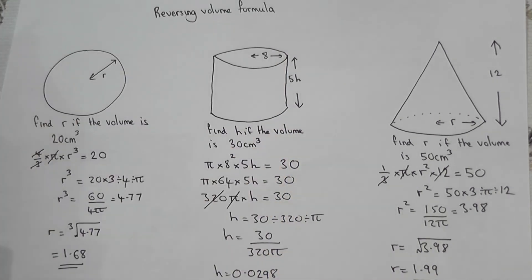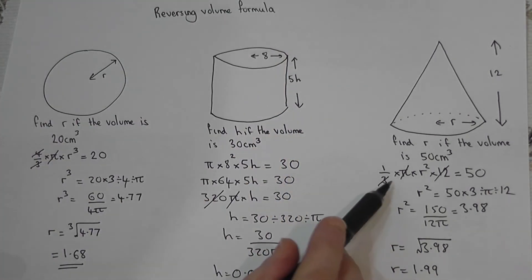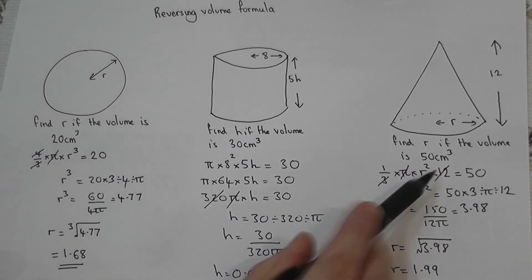And as always, I can check that. If I were to do 1/3 times pi times 1.99 squared times by 12, we'd get the answer of 50.